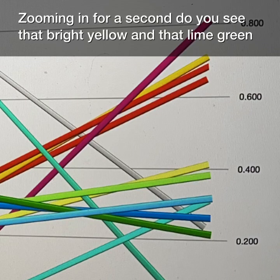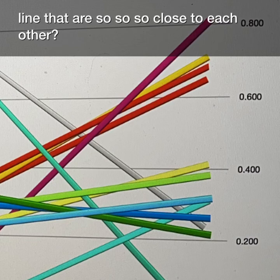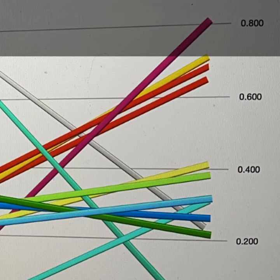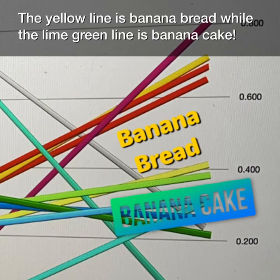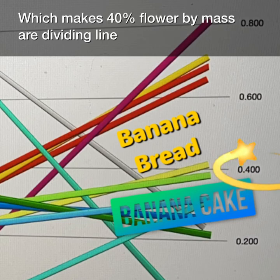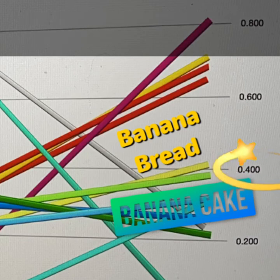Looking at this all together, anything with a high flour percentage is clearly in the bread zone, while flour percentages under 40% seem to be in the cake zone. Zooming in, do you see that bright yellow and that lime green line that are so close to each other? The yellow line is banana bread, while the lime green line is banana cake — which makes 40% flour by mass our dividing line.